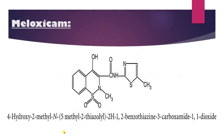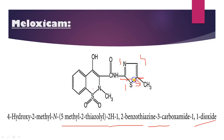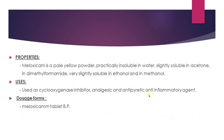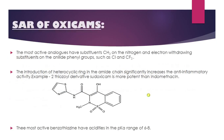Next is meloxicam. Numbering: 1, 2, 3, 4, 5, 6, 8 — it is 1,1-dioxide, 3-carboxamide, benzothiazine. The N substituent is 5-methyl-1,3-thiazol-2-yl: positions 1, 2, 3, 4, 5 of the thiazole ring. The compound is 4-hydroxy-2-methyl-N-(5-methyl-1,3-thiazol-2-yl)-2H-1,2-benzothiazine-3-carboxamide 1,1-dioxide. Properties: pale yellow powder, insoluble in water, slightly soluble in acetone and DMF. It is used as a cyclooxygenase inhibitor, as an analgesic and anti-inflammatory agent.